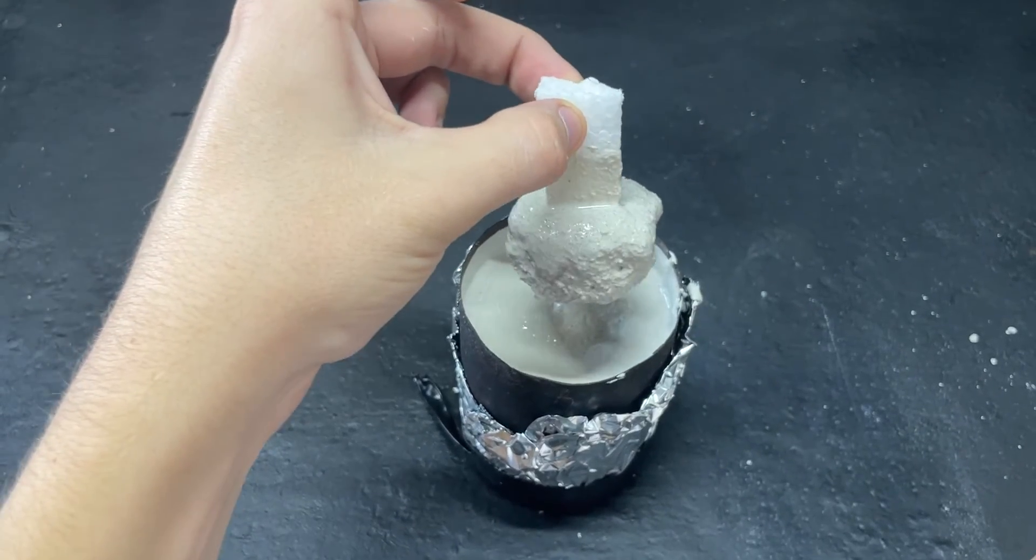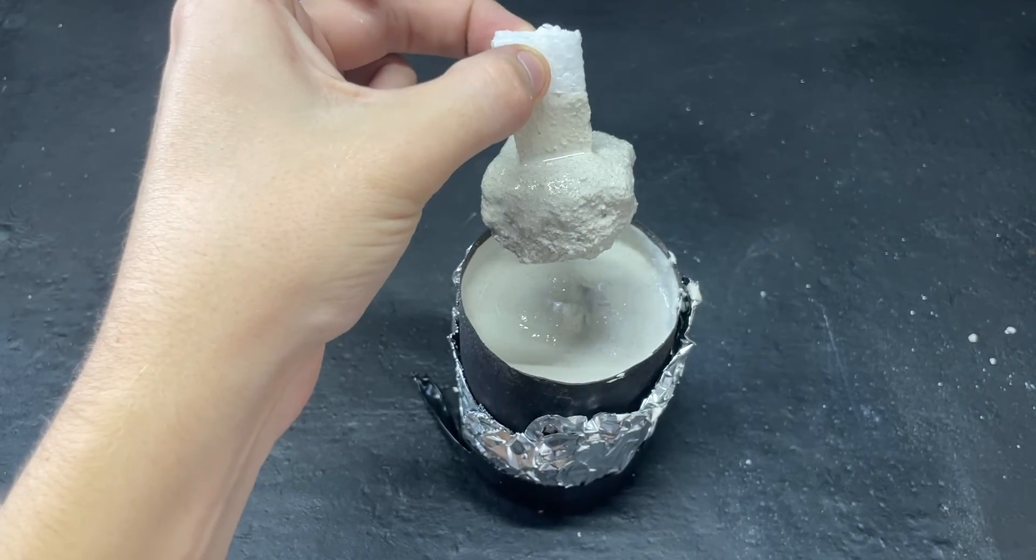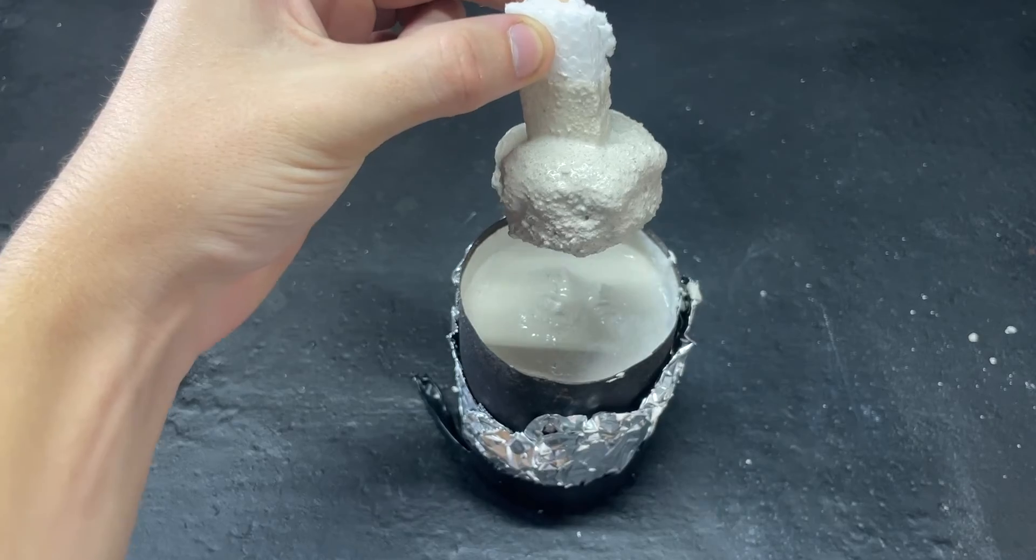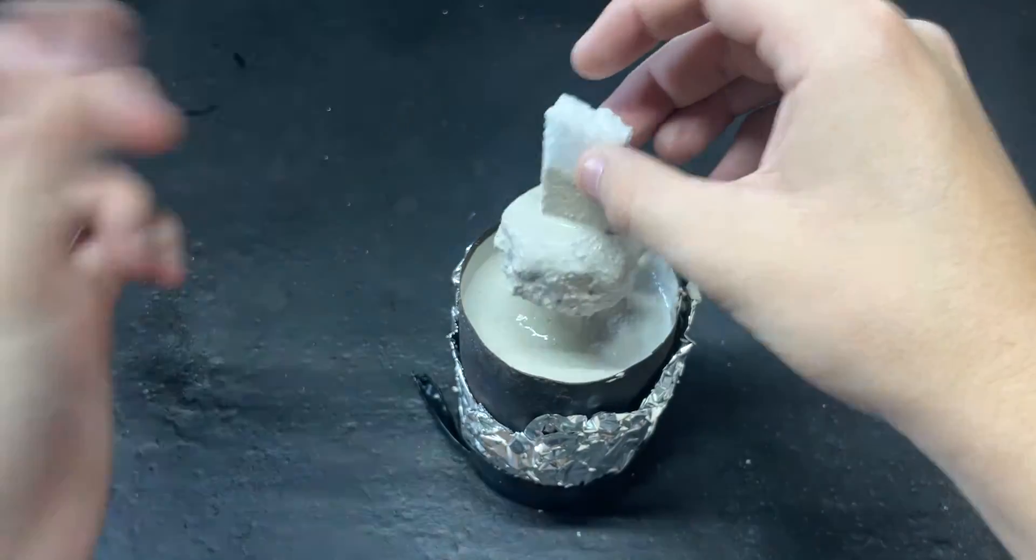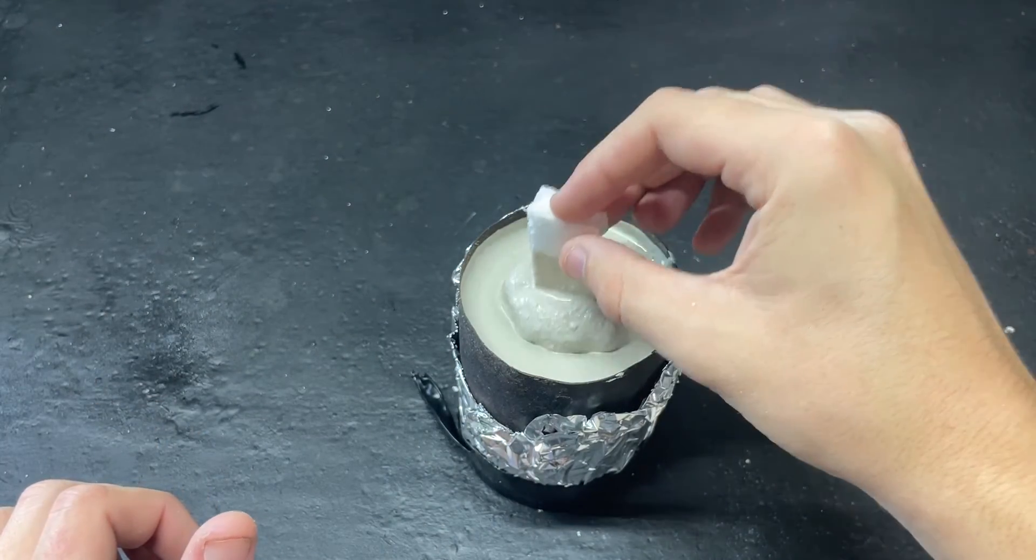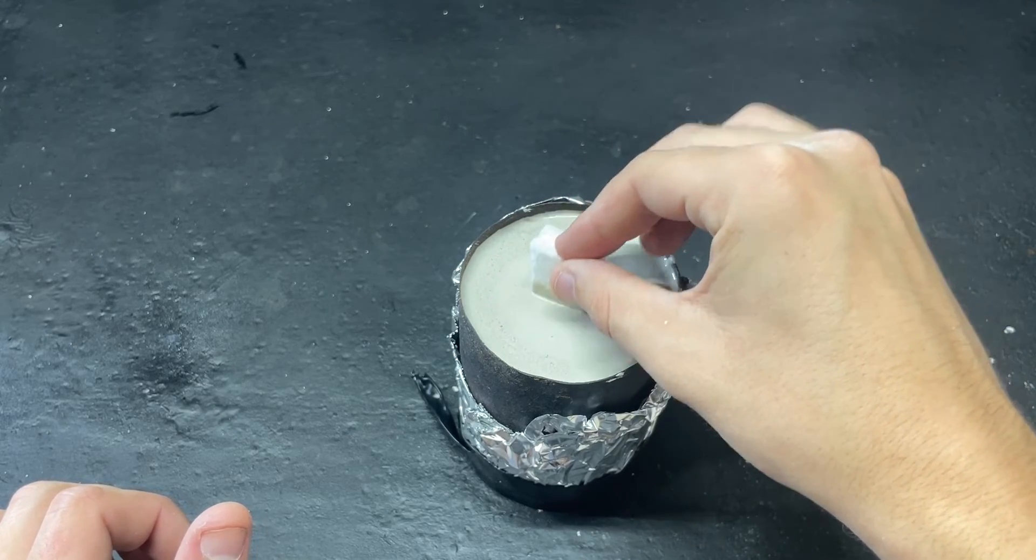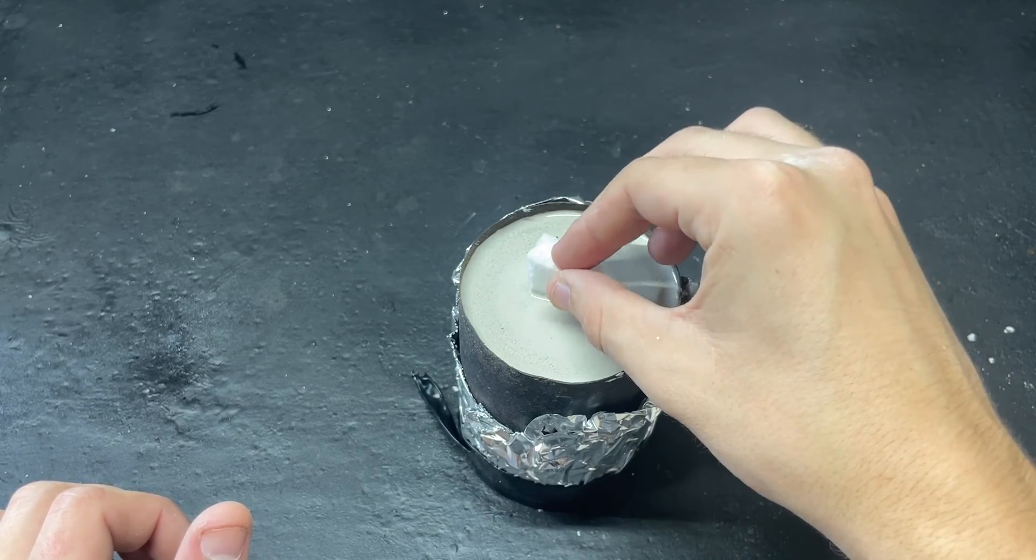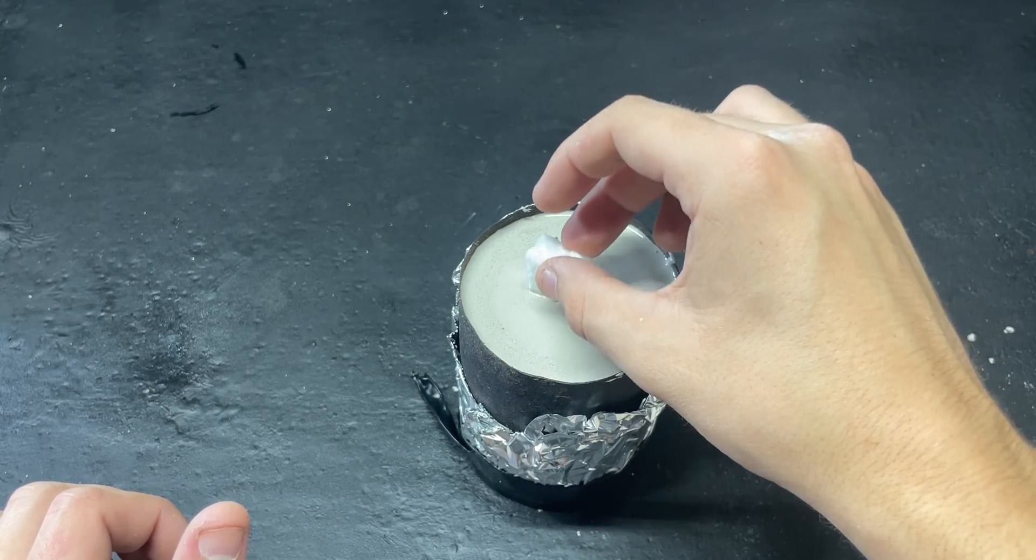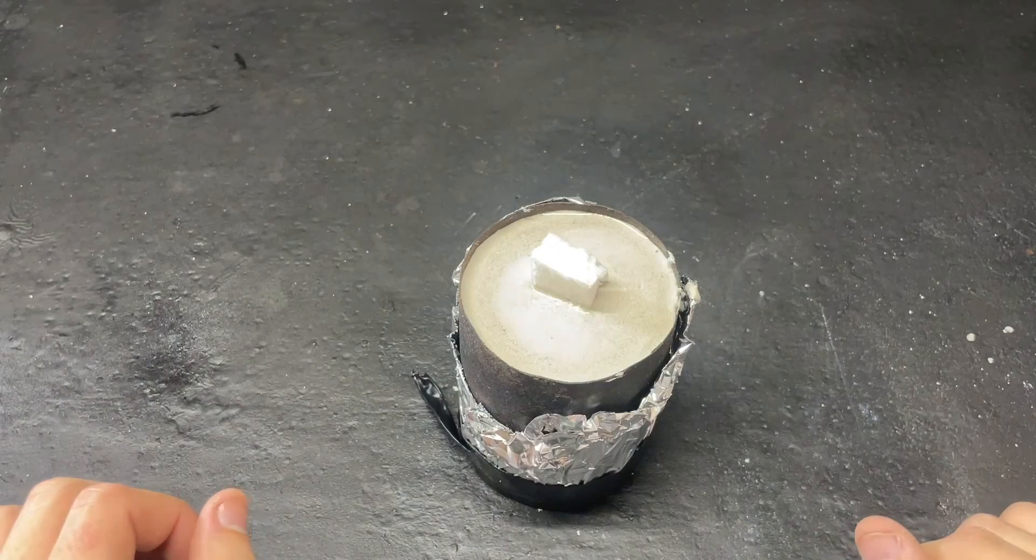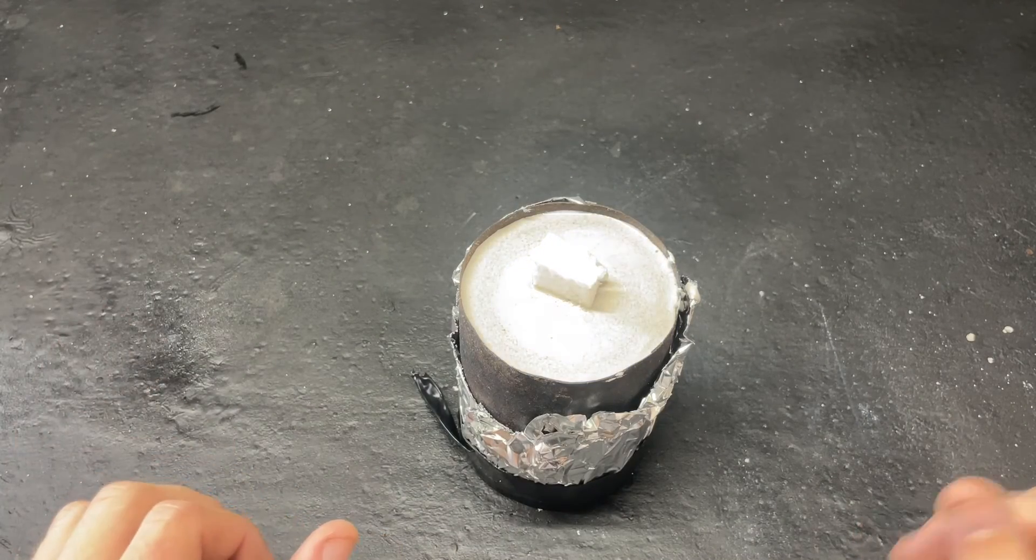So I forgot to hit record when putting our part into our investment, but all you got to do is just take the part you're wanting to mold and kind of shimmy it down into your investment, and just make sure it doesn't reach the bottom. Right there should just be about perfect. And now I just got to give this a couple hours to cure and I'll come back to you guys when that is done.